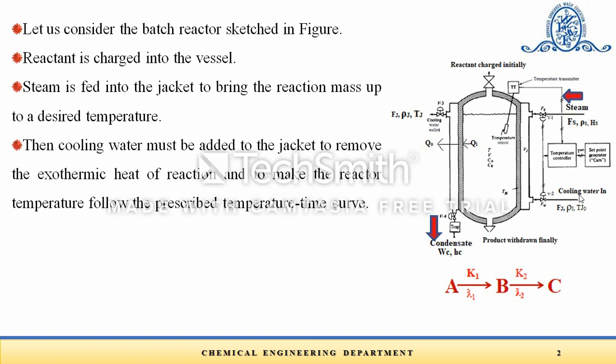Then cooling water must be added to the jacket to remove the exothermic heat of reaction and to make the reactor temperature follow a prescribed temperature-time curve. The cooling water inlet has flow rate Fj, density rho_j, and temperature Tj0. The same flow rate of cooling water exits at Fj with density rho_j but at a different temperature Tj.